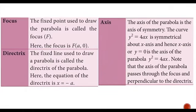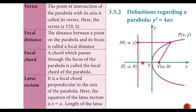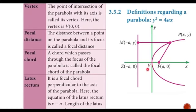The important terms: Focus — the fixed point in the parabola is called the focus. Directrix — the fixed line. Axis — the axis of symmetry, which is the line that divides the parabola into two equal parts; here the x-axis is the axis of symmetry. Vertex — the point of intersection of the parabola with its axis; since the parabola is at the origin, V is (0, 0).